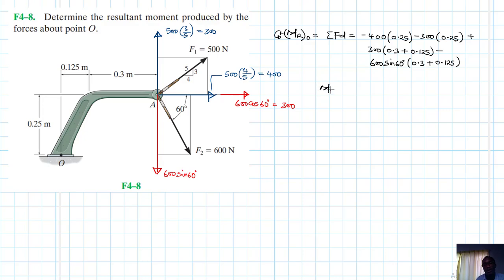Therefore, this just gives us M_RO, or resultant moment about point O, is equal to minus 400 times 0.25, minus 300 times 0.25, plus 300 times 0.3 plus 0.125, and minus 600 sin 60. Let me put it in brackets, sin 60, times 0.3 plus 0.125.